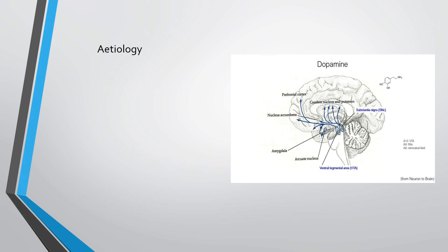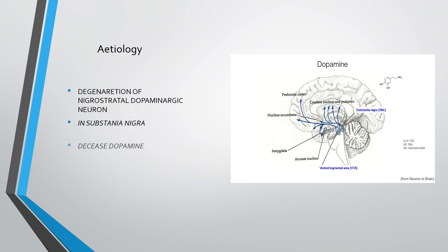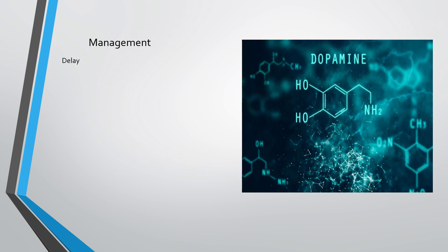Regarding etiology, this picture shows the substantia nigra and the caudate nucleus. There is degeneration of nigrostriatal dopaminergic neurons — these neurons are responsible for producing dopamine and they reside in the substantia nigra. When these neurons are damaged, dopamine is reduced. Decreased dopamine is the underlying cause — the etiology — of Parkinson's disease.